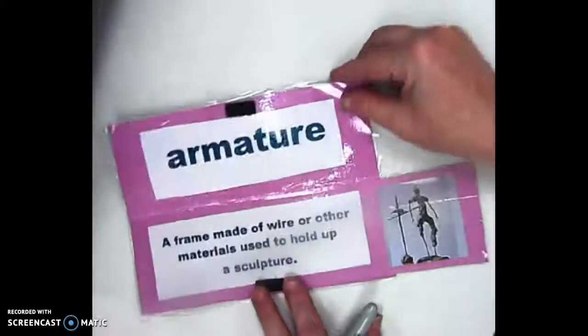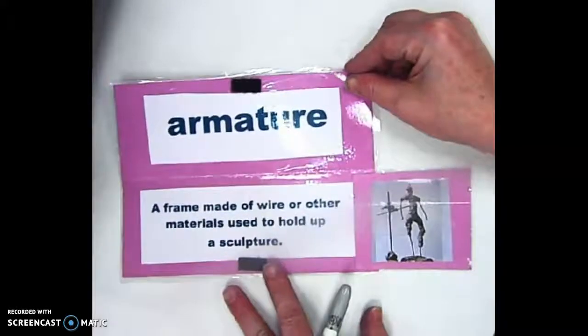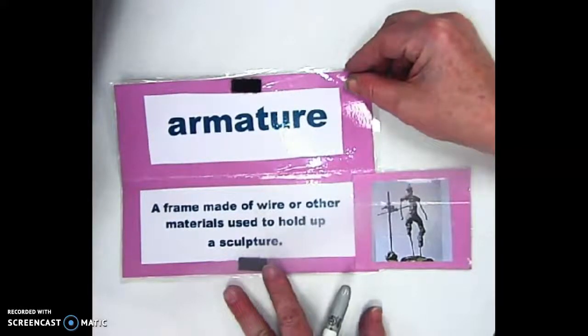we actually have to use something called an armature. So an armature is a frame made of wire or other materials used to hold up the sculpture. I like to think of an armature as something of a skeleton.